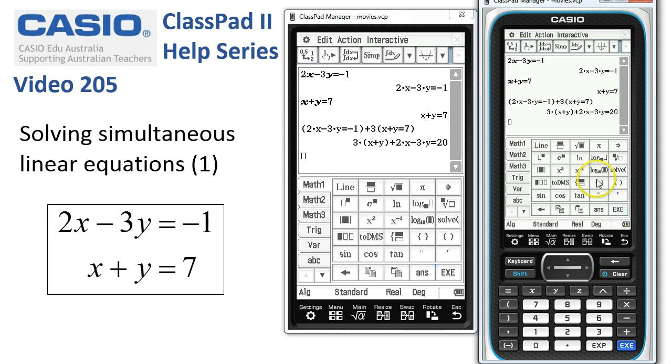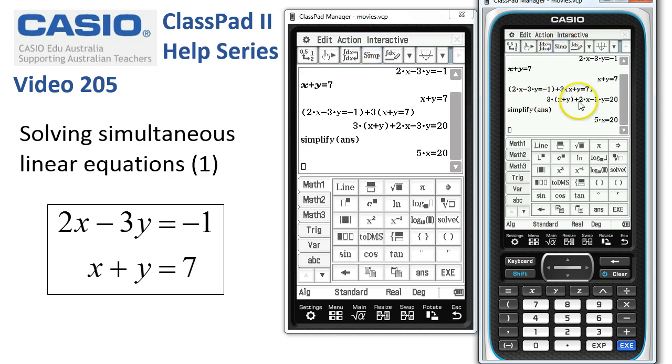Now when I tap execute, ClassPad's written out what we asked it to. I'm going to tap simplify, and ClassPad's expanded and collected like terms. We end up with what we expected: 5x = 20, and the y coefficient's been eliminated.